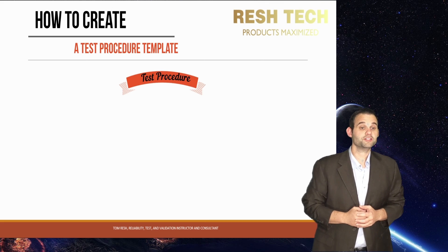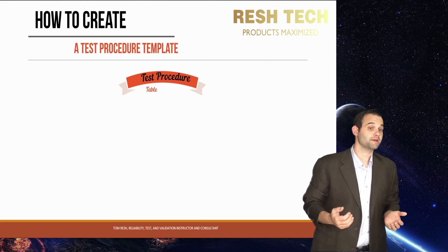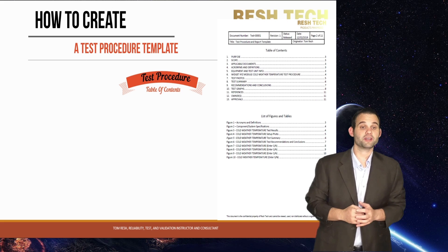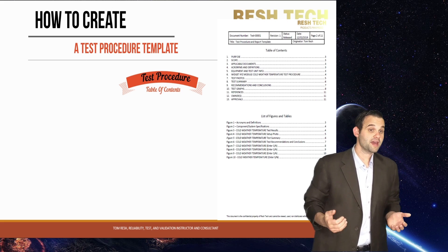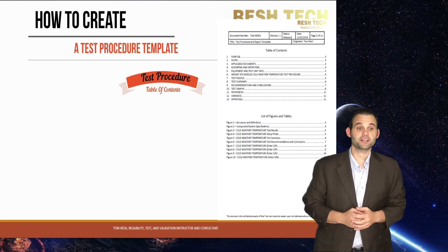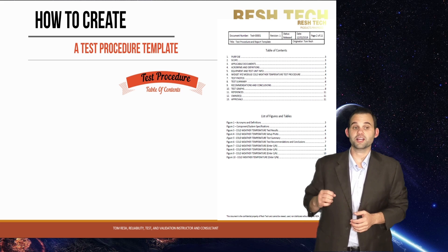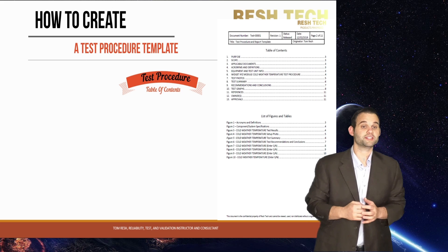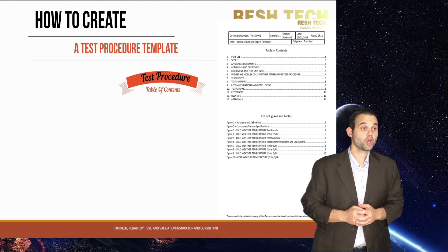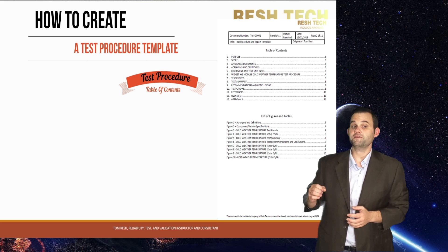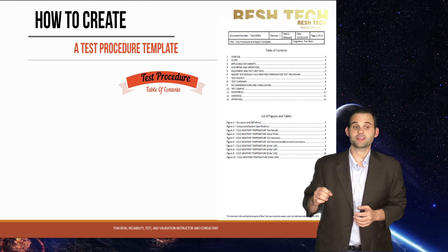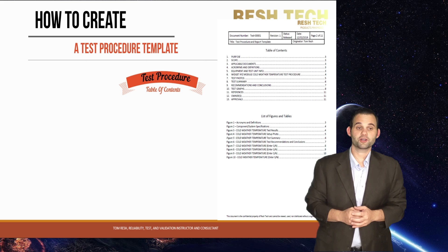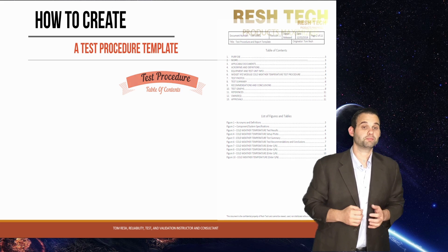For the next section, include a table of contents. This allows quick navigation to sections of interest for the reader. Make the sections and page numbers links so the reader can easily click a section in the table of contents and jump to it. You can also include a table of figures in this section or at the end of the document — no wrong choice in regards to placement.